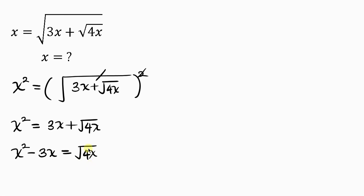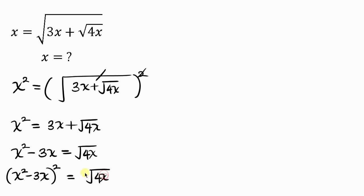Our next step will be to get rid of the remaining square root by taking the square of both sides again. For the left I have x squared minus 3x, squaring that, equal to the right hand side where the square root of 4x is squared. Notice that squaring cancels off the square root on the right.